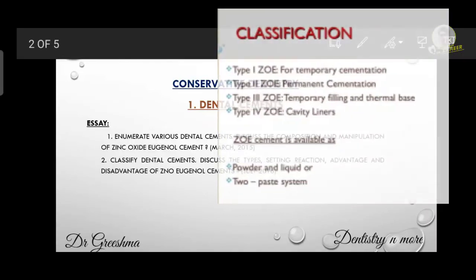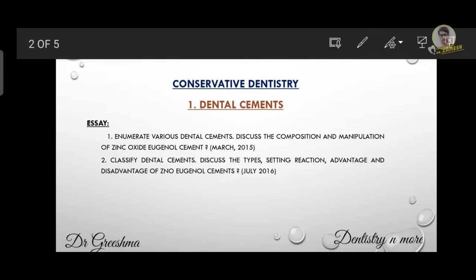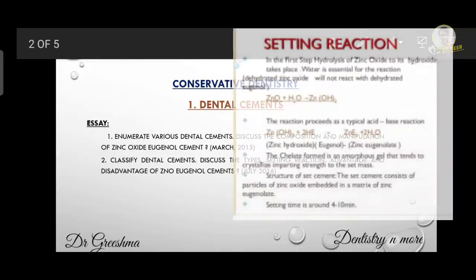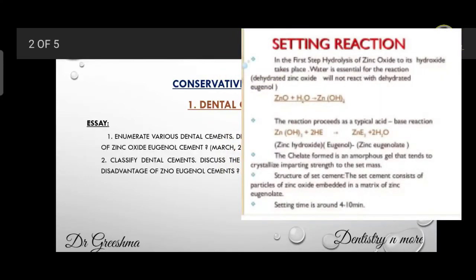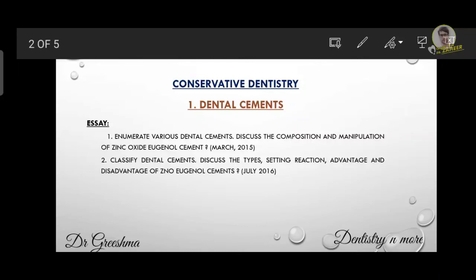Coming to the setting reaction of zinc oxide eugenol cement: in the first reaction, hydrolysis of zinc oxide takes place — zinc oxide plus water gives zinc hydroxide. The reaction proceeds as a typical acid-base reaction: zinc hydroxide plus eugenol gives zinc eugenolate plus water. The chelate formed is an amorphous gel. Advantages include good dimensional stability and it is inexpensive and adheres well to dental compounds. Disadvantages: it may be irritating to soft tissue and has inadequate working or setting time.